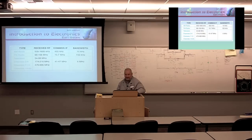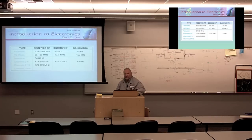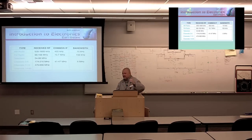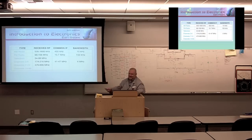Other advancements included closed captioning — so that hearing-impaired viewers could read on-screen text — and SAP, Secondary Audio Programming, where different languages could be broadcast. You could watch a show and change the settings to hear an alternate audio track in Spanish, French, or Portuguese. Engineers had to make all of this fit into the 6 MHz bandwidth — and they made it work.